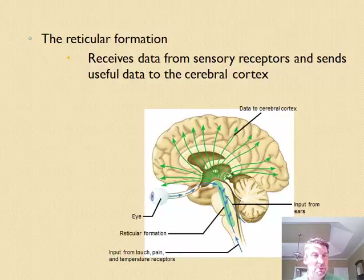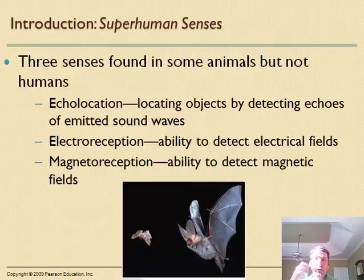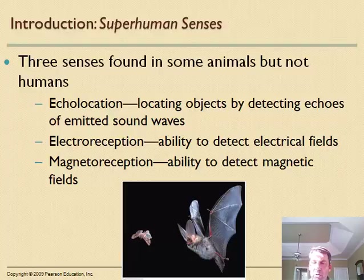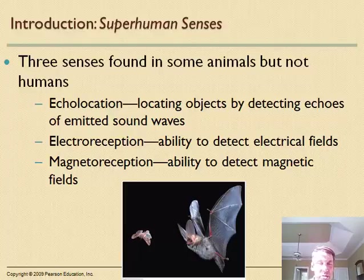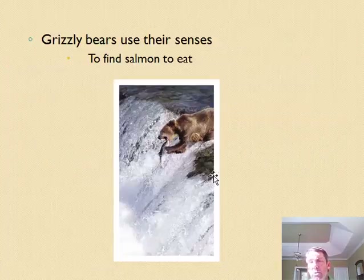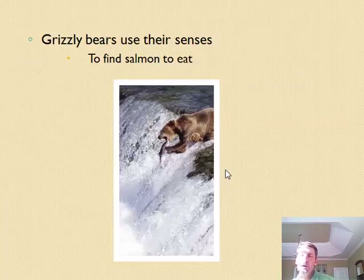Next we discuss sense organs used to pick up information and send it to the brain. Different animals have different sensory organs, with a lot of similarity across the animal kingdom. Some animals have unique senses like echolocation in whales and bats, electroreceptors used for migration, and magnetoreceptors for detecting magnetic fields. Animals use these sense mechanisms for predation, migration, and other behaviors.